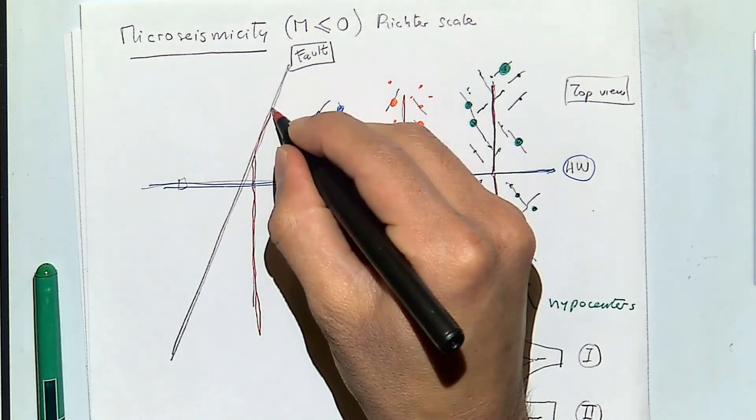No one knows exactly how hydraulic fractures look in nature. Micro seismic clouds give you an idea of the extent — mostly how far the fluid reached — but they don't tell you the exact shape of the hydraulic fracture.